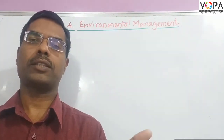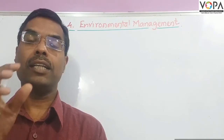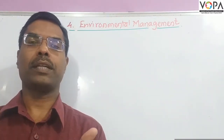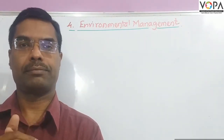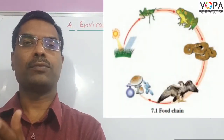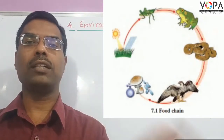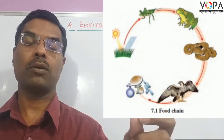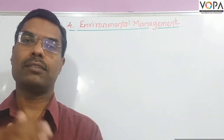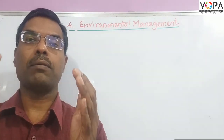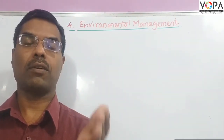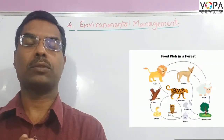Apex consumers are organisms that are not directly eaten by other organisms — no organism depends on them for food. A simple food chain example: grass → grasshopper → frog → snake → eagle. The grasshopper is the herbivore and primary consumer, frog is the secondary consumer, snake is the tertiary consumer, and eagle is the apex consumer. This feeding interaction sequence in every ecosystem is called a food chain.